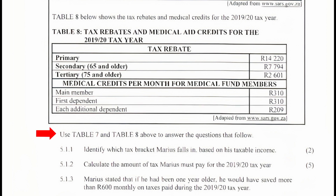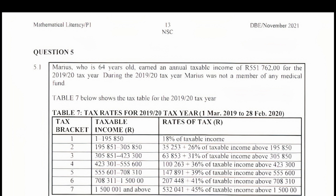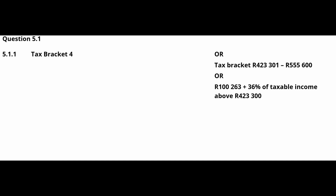We are instructed to use Tables 7 and 8 to answer the questions that follow. Question 5.1.1: Identify which tax bracket Marius falls in. Based on his taxable income from Table 7, Marius falls in the fourth tax bracket — R423,301 to R555,600 — with a rate of R100,263 plus 36% of taxable income above R423,300.